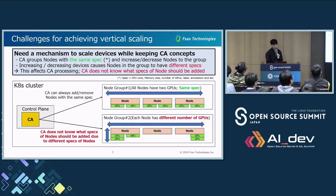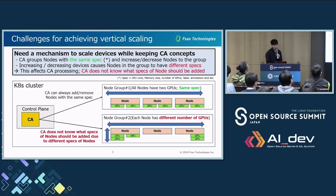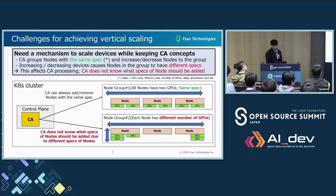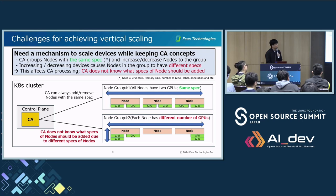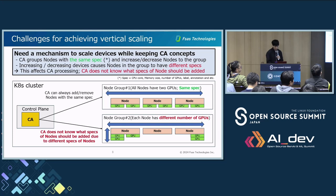Let's look at the challenges of achieving vertical scaling of a device. Since DDS leverages CA, DDS needs a mechanism to scale the device while keeping the CA concept. However, when DDS scales devices, CA's processing is affected. Specifically, CA groups nodes that have the same spec — in CA, this is called a node group. CA also removes nodes from a node group, meaning nodes to be removed must have the same spec. However, if DDS scales the device, nodes in the node group have different specs. For example, in node group number 2, when CA determines to add a node, CA does not know what spec the node should have, so CA cannot make such a decision. This is the current problem.